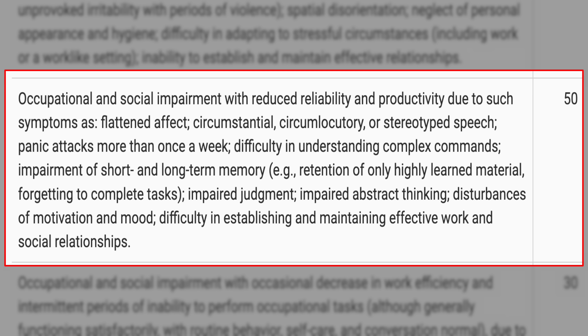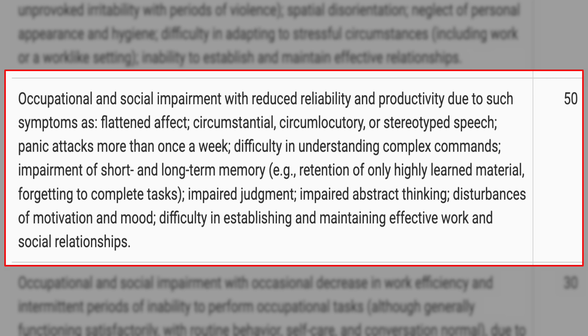Other 50% symptoms include: circumstantial or stereotyped speech, panic attacks more than once a week, difficulty understanding complex commands, impairment of short and long-term memory — for example, retention of only highly learned material or forgetting to complete tasks. This sounds like my life. We also have impaired judgment, impaired abstract thinking, disturbances of motivation and mood, and difficulty in establishing and maintaining effective work and social relationships — which directly speaks to that occupational and social impairment.